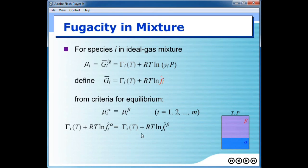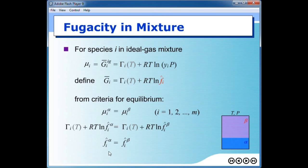R is a constant and can be dropped; temperature is also dropped. As a result, the fugacity of species I in phase alpha must equal the fugacity of the same species in phase beta. Since our system contains more than one species, we put a cap on the fugacity symbol to represent that the system is not a pure component but a mixture. This is the criteria for phase equilibrium, which is a more convenient form than using chemical potential.